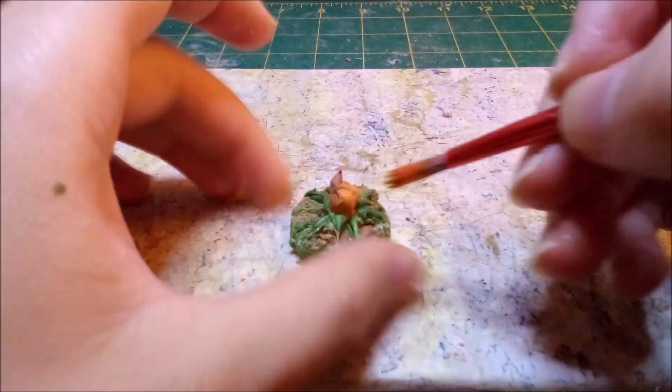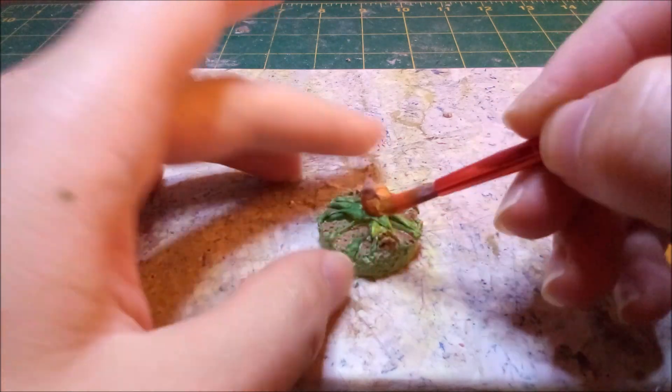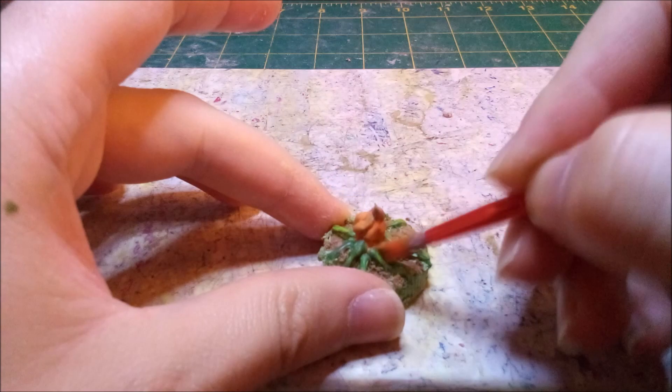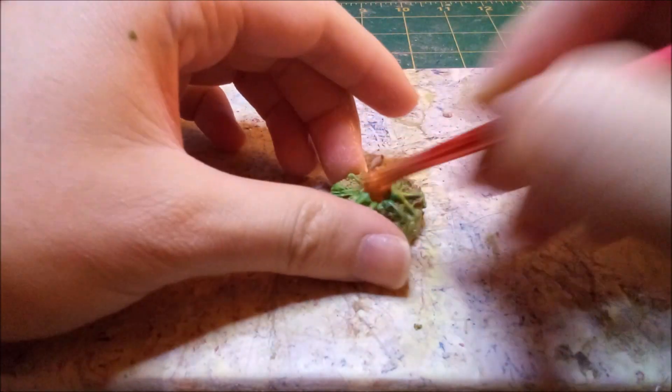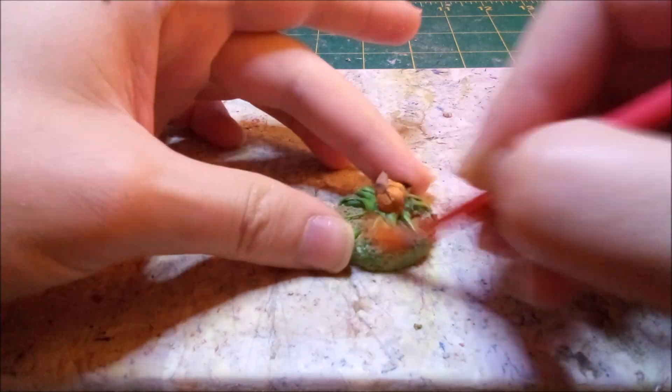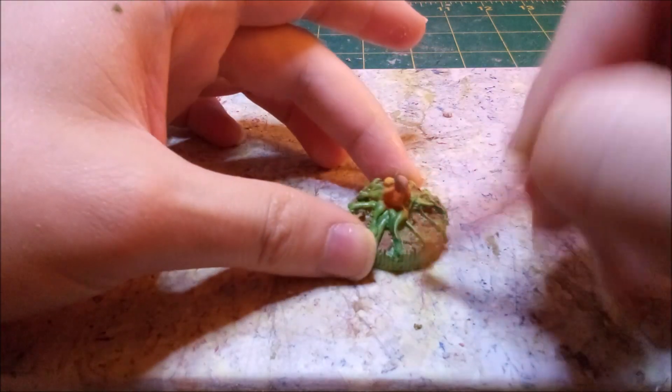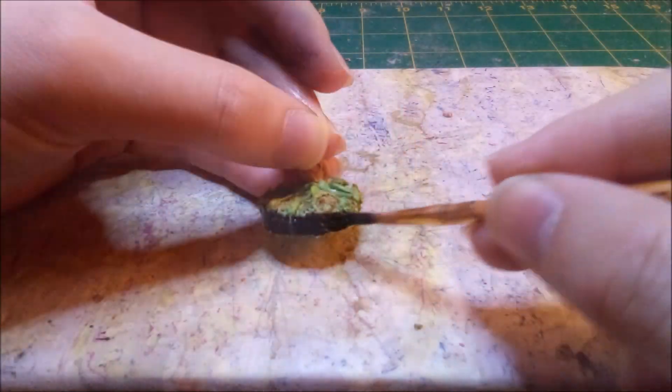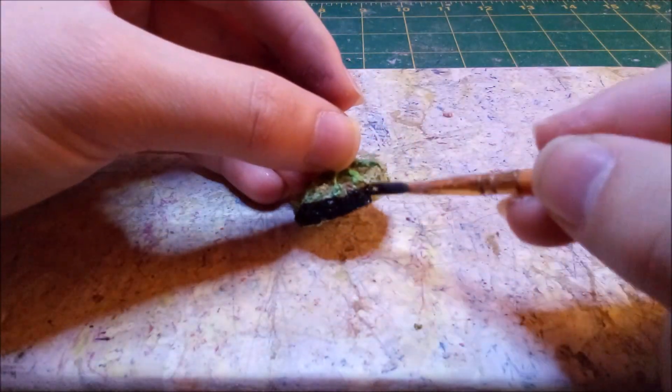Once all the base coats are dry, I give the vines a gentle dry brush of light green. To finish things off, I give everything a dry brush of yellow with similar reasons to the spider. Painting the base black doesn't take too long, especially since I've gotten used to working on much larger bases.